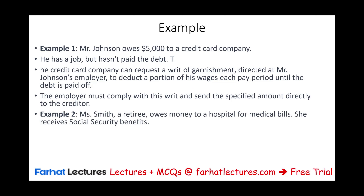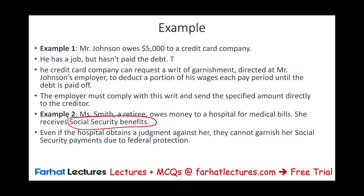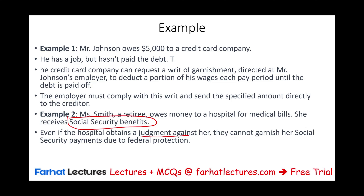Mrs. Smith, a retiree, owes money to a hospital for medical bills. She receives social security benefits. Even if the hospital obtains a judgment against her, they cannot garnish her social security because it's protected. However, if she has other income like a pension or funds in a bank, those could potentially be subject to garnishment.